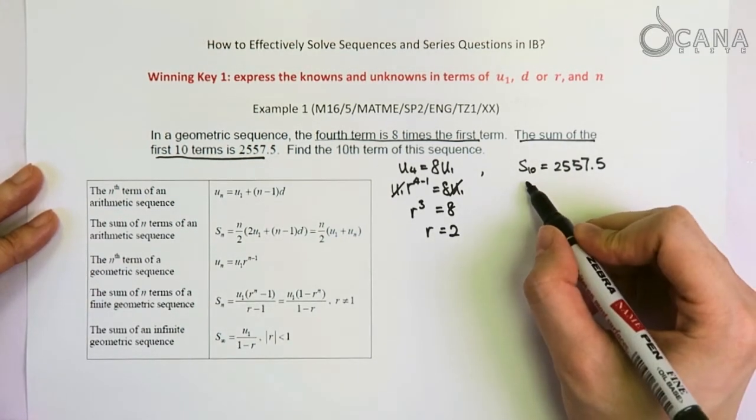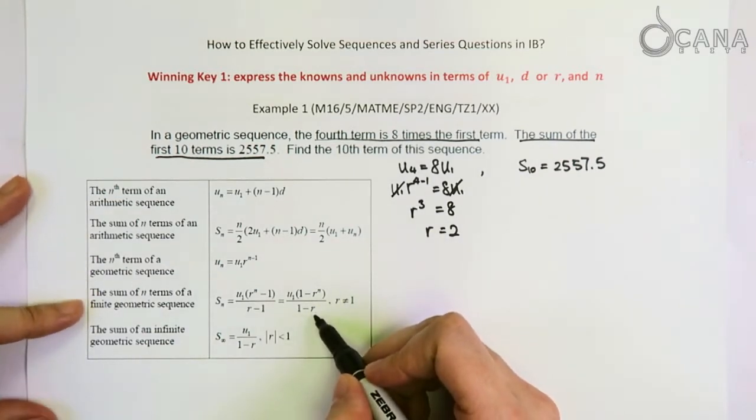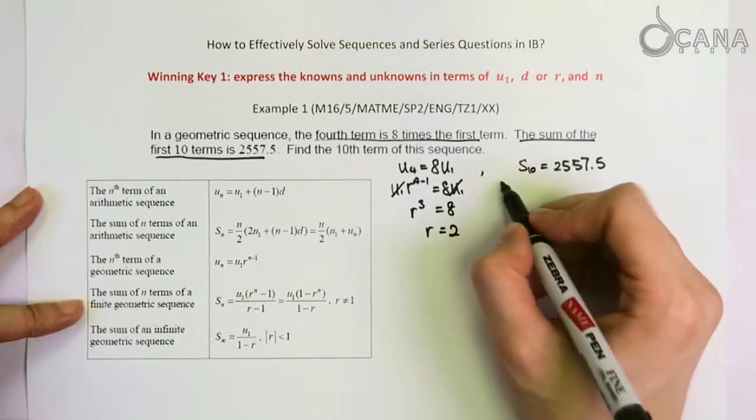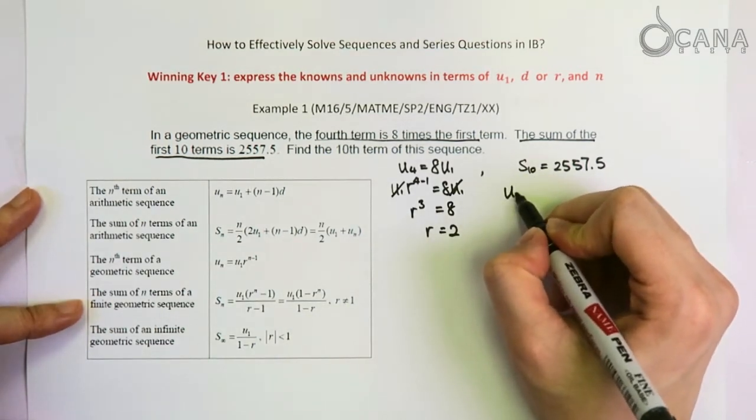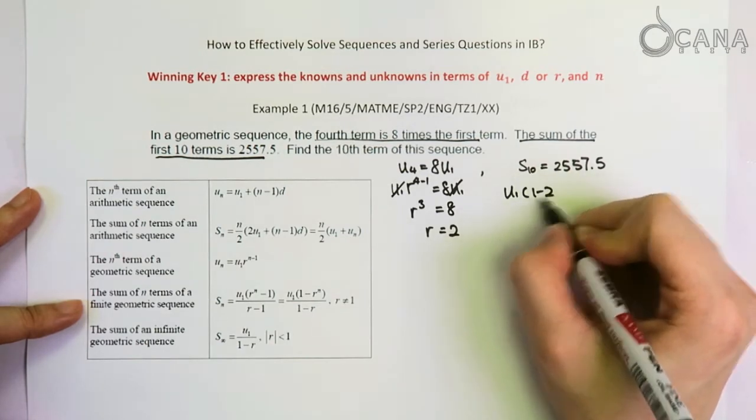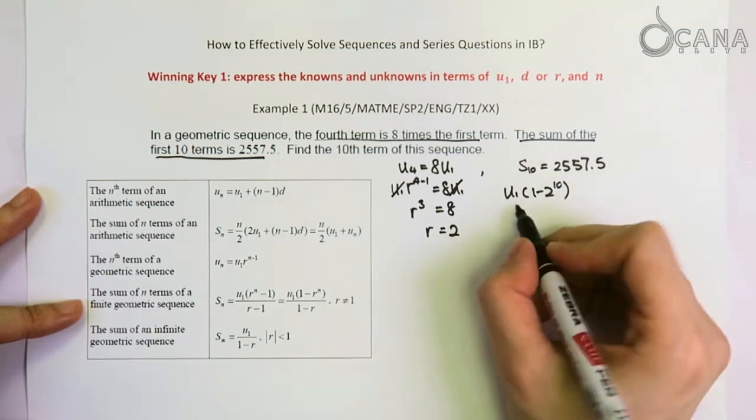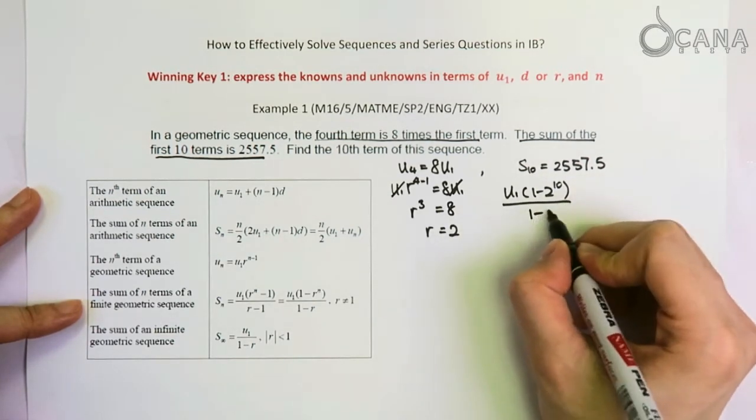Now we can focus on the second equation. With the formula here for the sum of the first N terms for a geometric sequence, S10 can be rewritten as U1 times 1 minus 2, which is the common ratio that we've just found, to the power 10, which is N in this case, over 1 minus 2.